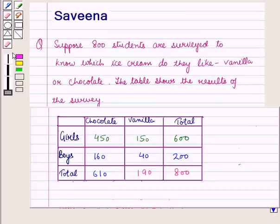Hello and welcome to the session. In this session we will discuss a question which says that suppose 800 students are surveyed to know which ice cream flavor they like — vanilla or chocolate. The table shows the results of this survey.